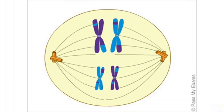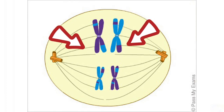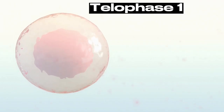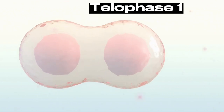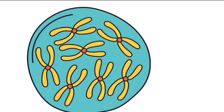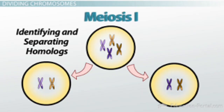After metaphase 1, the next phase is anaphase 1. During anaphase 1, the homologous pairs of chromosomes are separated and pulled to opposite ends of the cell by the action of the spindle fibers. The last phase of meiosis 1 is telophase 1. During telophase 1, the cell is split along its midpoint into two daughter cells, each containing 23 chromosomes. However, these 23 chromosomes are double-structured, meaning each chromosome is made up of two sister chromatids. This marks the end of meiosis 1.